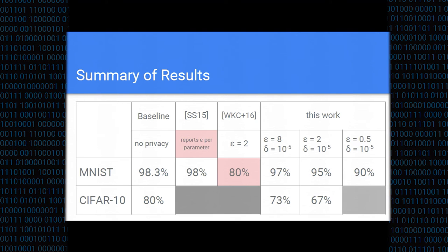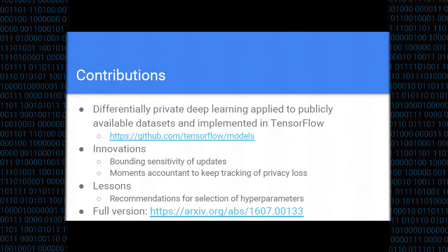Finally, these are our results. We achieved 97% accuracy on MNIST with epsilon of 8, and it increases slightly as we turn out the privacy parameters. On CIFAR, the gap between the baseline and our privacy-preserving mechanisms is larger. And I invite you to try to improve on our results.